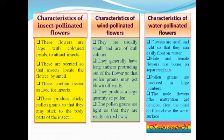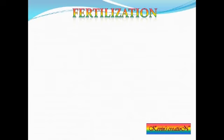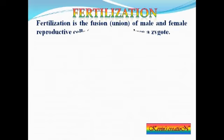In water-pollinated flowers, the male flowers after maturation get detached from the plant and float above the water surface. They then come in contact with the female flowers and pollination takes place.